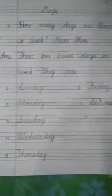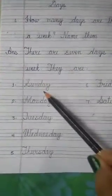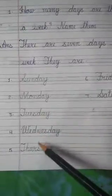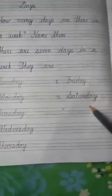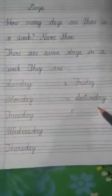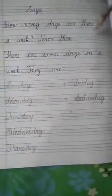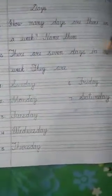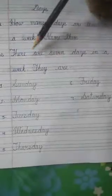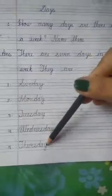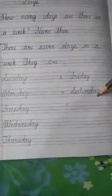Again, we will repeat it. They are Sunday, Monday, Tuesday, Wednesday, Thursday, Friday, and Saturday. How many days are there in a week? There are seven days in a week. Name them — they are Sunday, Monday, Tuesday, Wednesday, Thursday, Friday, and Saturday.